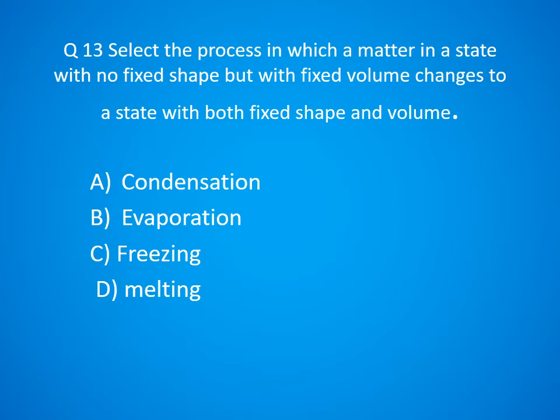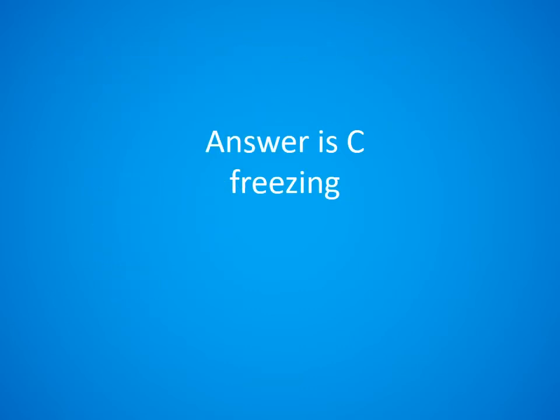Question 13. The process in which a matter in a state with no fixed shape but with a fixed volume changes to a state with both fixed shape and volume: A. Condensation, B. Evaporation, C. Freezing, D. Melting. The answer is Option C. Freezing.